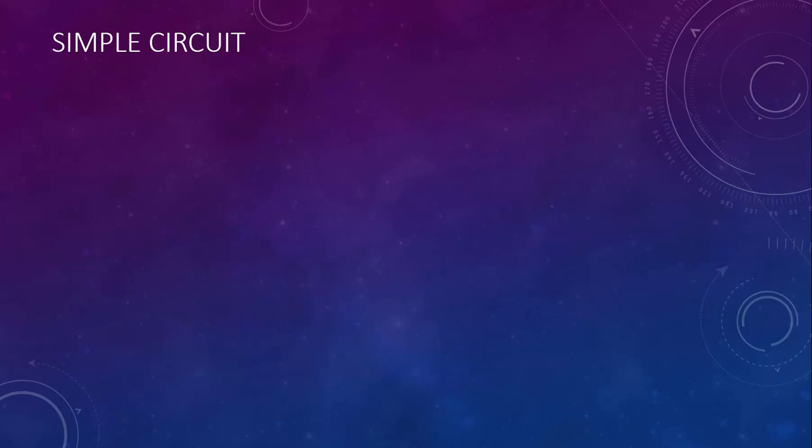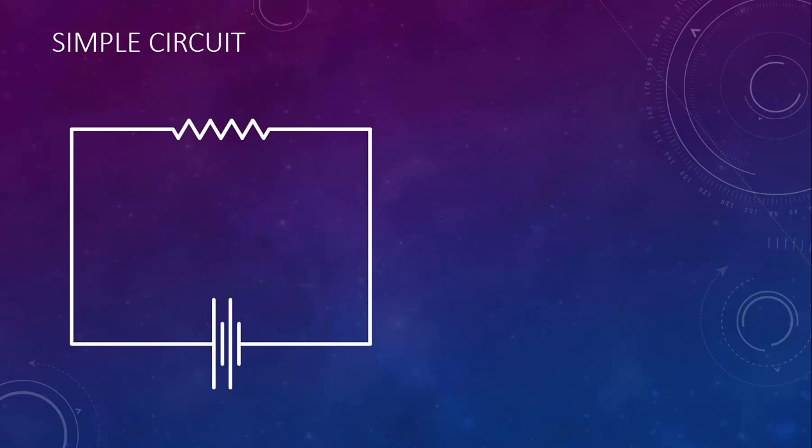Let's take a look at a very simple circuit. Here we have a battery connected to a resistor with a few wires. A resistor is a very common electrical component that is used to regulate the amount of current in a circuit. All it does is take electrical energy and convert it into heat.